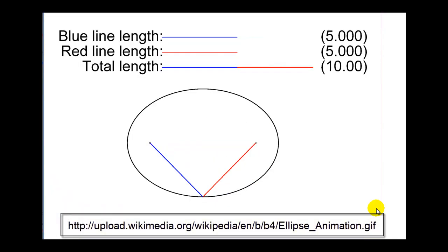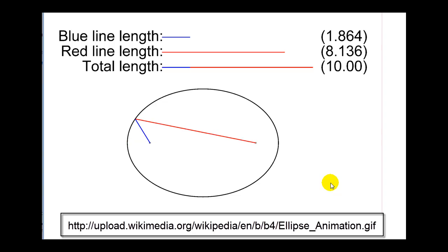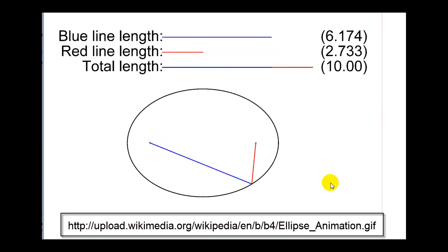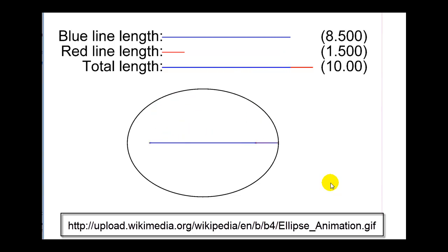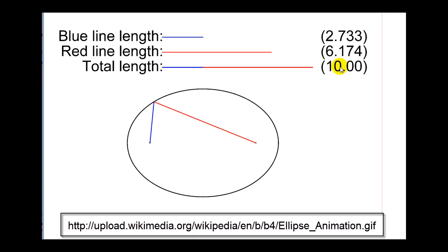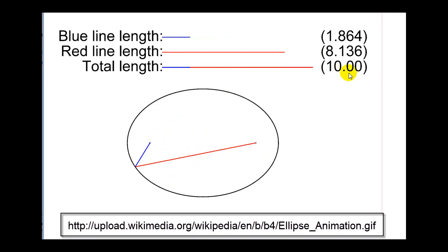This animation is the best illustration of the definition of an ellipse. If we pick any point on an ellipse and construct a segment to each focus — shown here in blue and red — the sum of those two lengths is always constant. As we see here, the sum of those lengths is always equal to ten, regardless of the point on the ellipse.